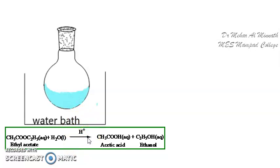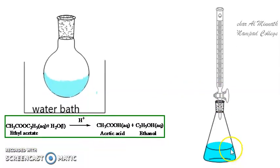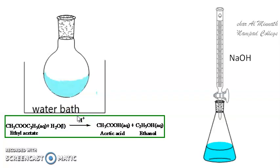You can use either sulfuric acid or HCl as the catalyst. At time T₀, when you take the reaction mixture and titrate it against NaOH, the amount of NaOH consumed will be equal to the amount of the acid catalyst you have used, because no acetic acid has been formed yet at T₀.